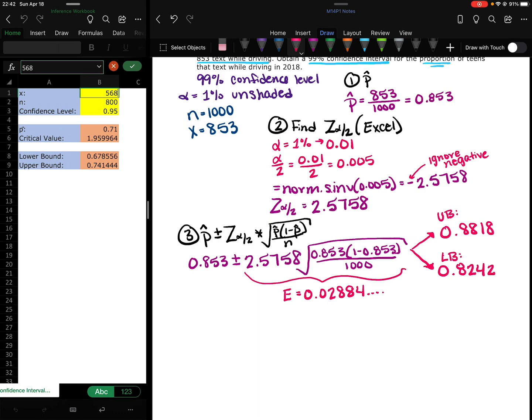So again, I did all of this work by doing it all by hand. So I found p-hat, I found the z-score using my knowledge of a normal curve and the symmetry, and 99% is shaded leaving 1% unshaded. And we need just one of the regions, and then I plugged it into the equation.